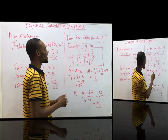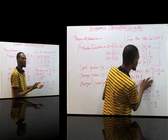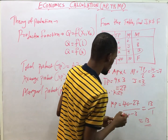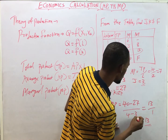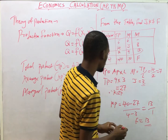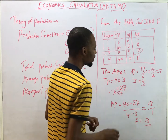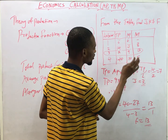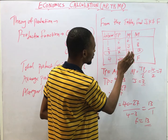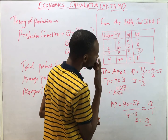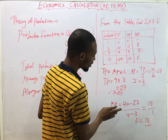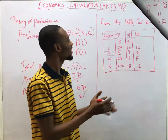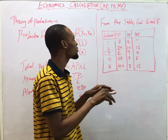So f, the Marginal Product, is 13. To summarize: instead of k put 27, instead of j put 7, and instead of f put 13. That's Question 1 done. Now look at Question 2.